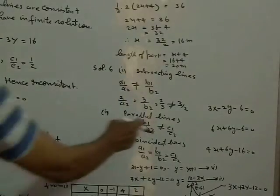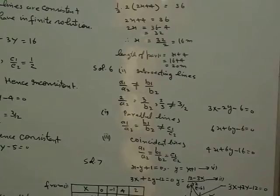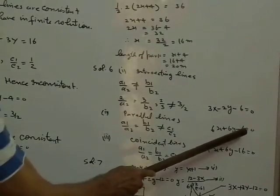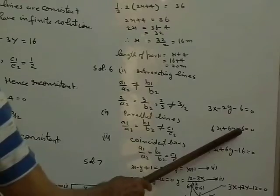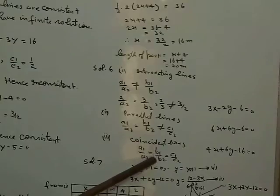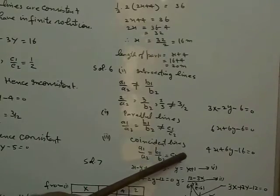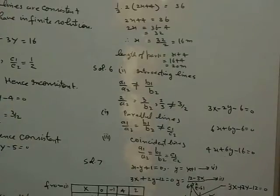For the second part, the lines are parallel, meaning a1/a2 equals b1/b2 but should not equal c1/c2. So the second equation may be 4x plus 6y minus 6 equal to 0. For the third part, if the lines are coincident, then a1/a2 equals b1/b2 equals c1/c2. So the second equation may be 4x plus 6y minus 16 equal to 0.